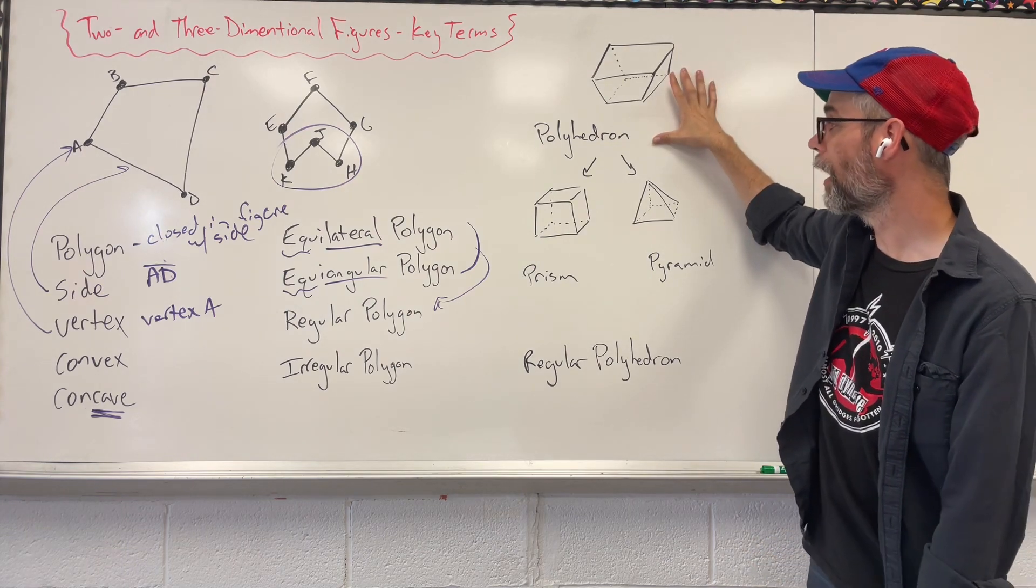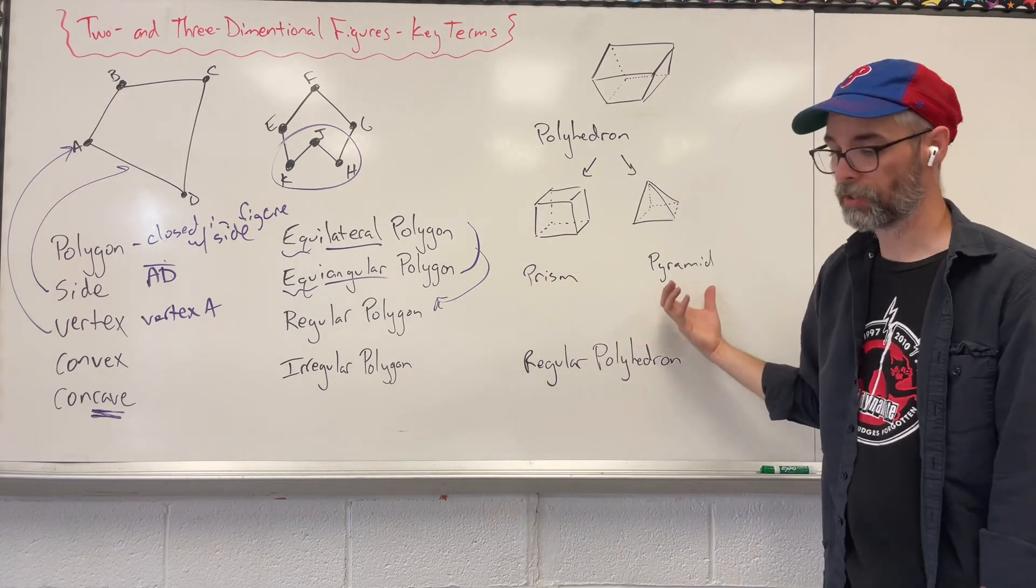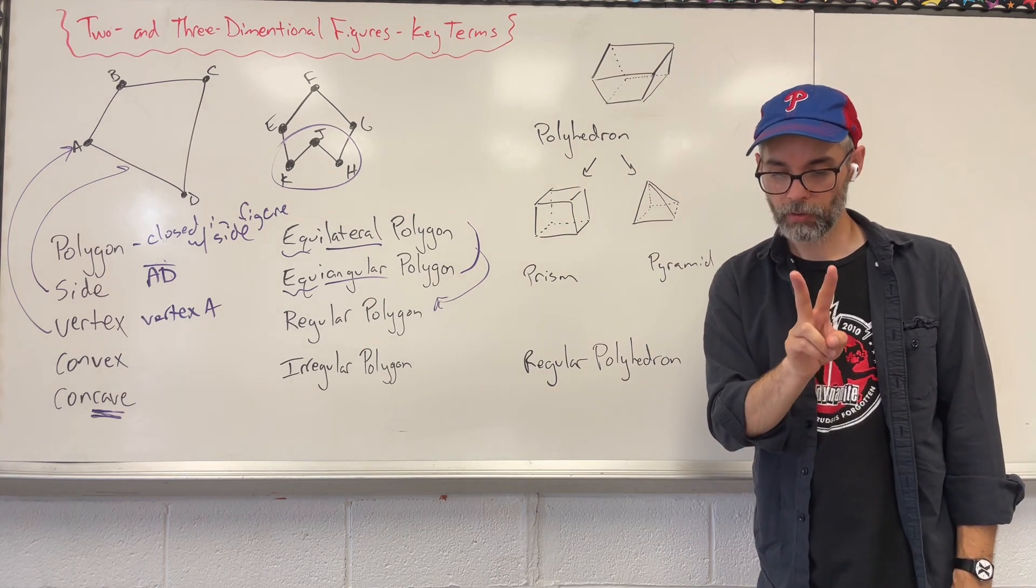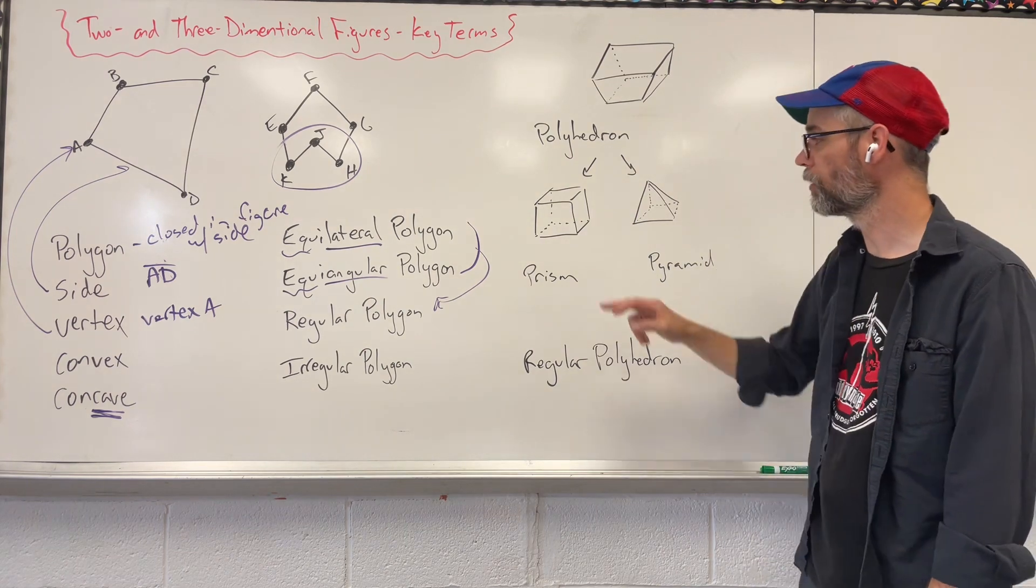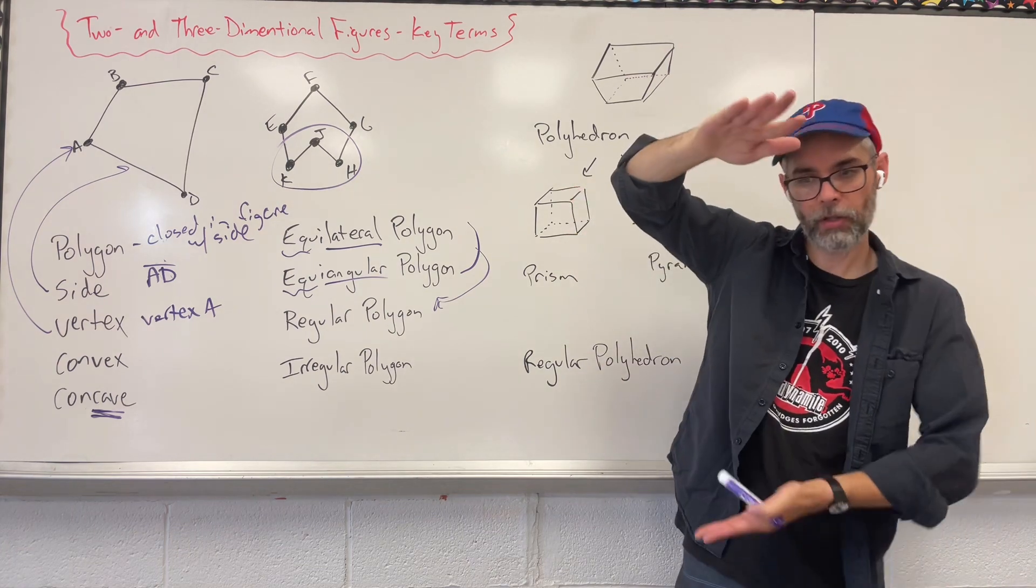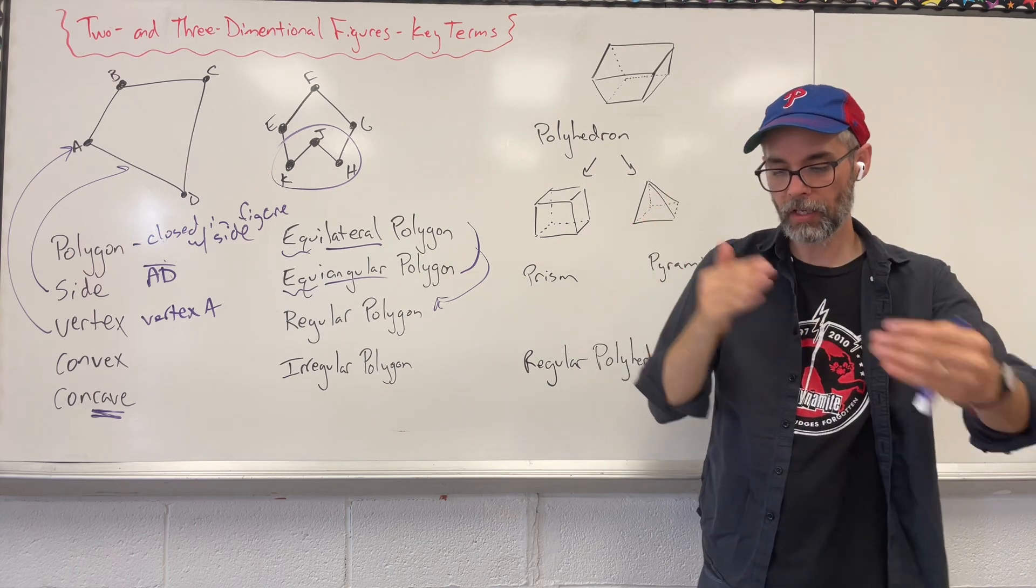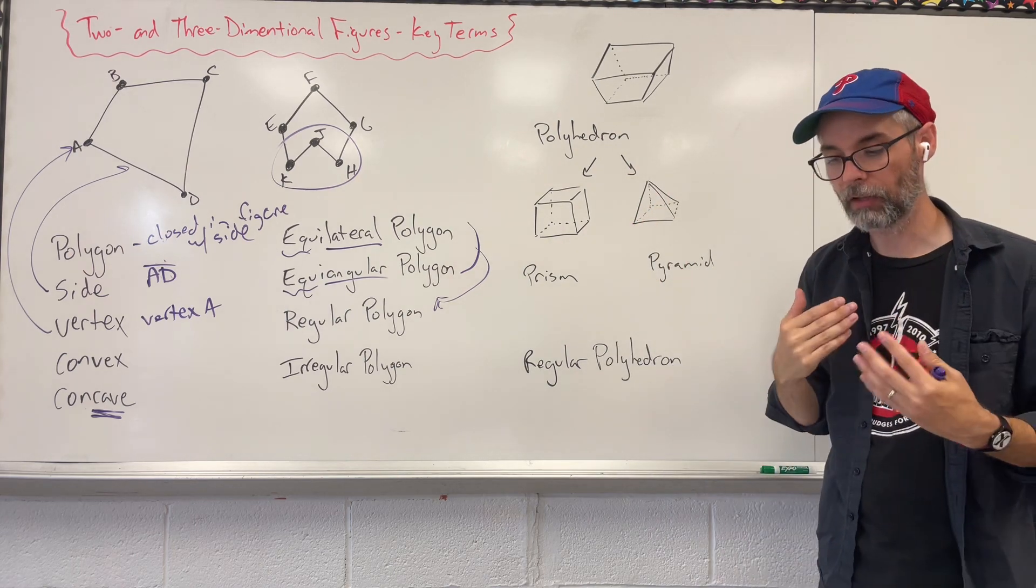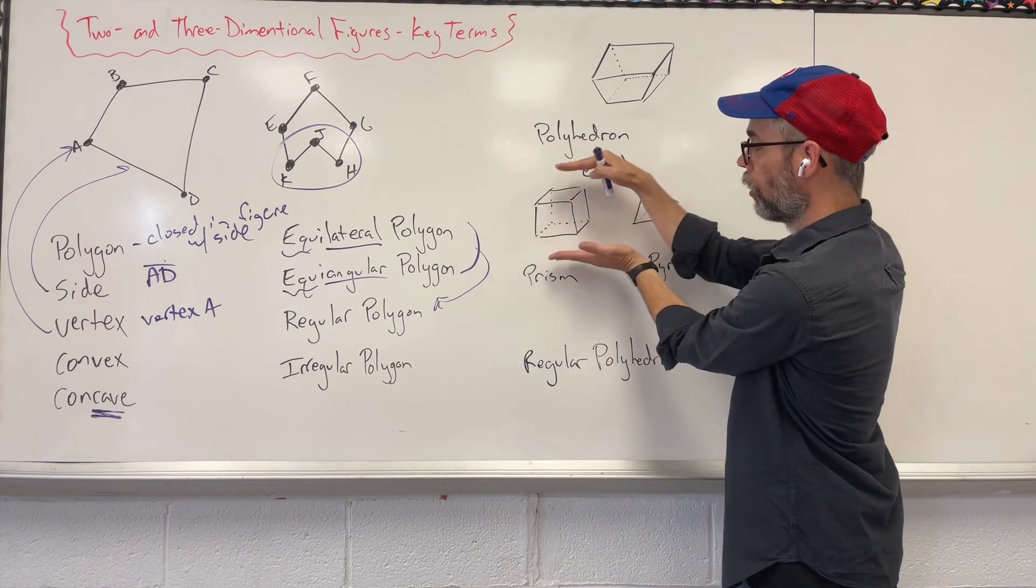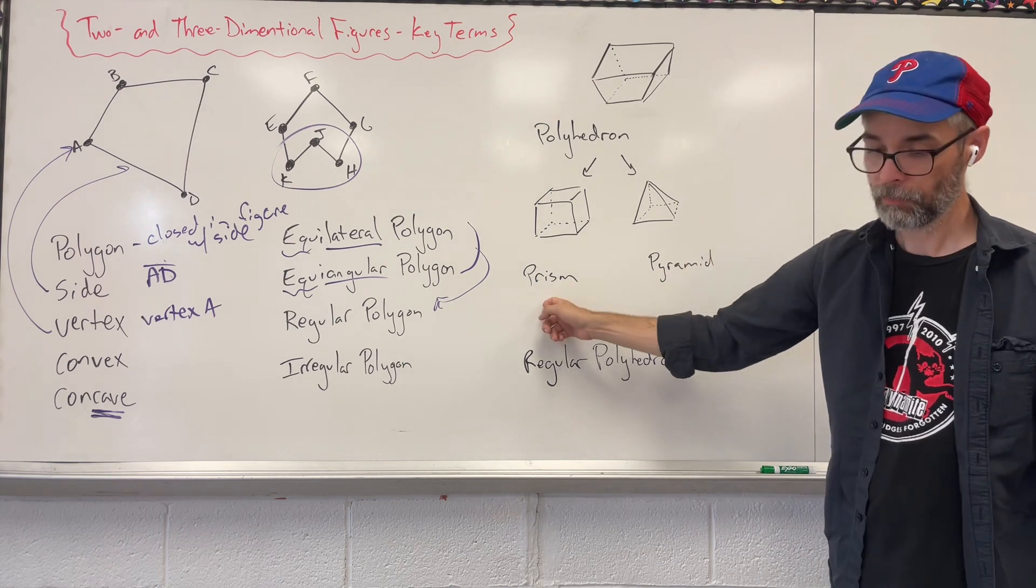Now, within the polyhedrons, we can split this up into two classifications. One's a prism, one's a pyramid. A prism, you're going to have two parallel congruent faces. Two parallel, so if we're looking at this cube, top side of the cube, bottom side of the cube, they're parallel to each other. And they're all connected by different kinds of parallelogram faces. So all our sides are parallel with each other. We call that a prism.